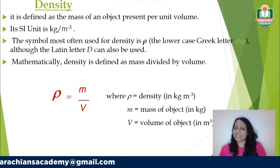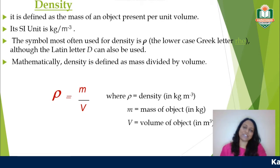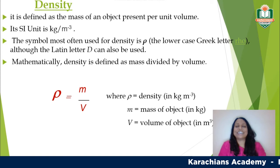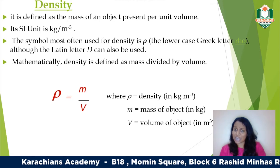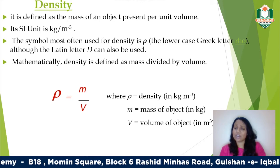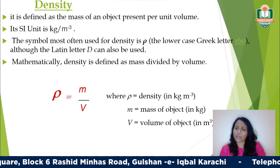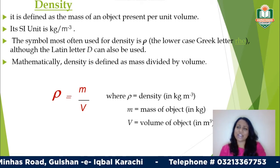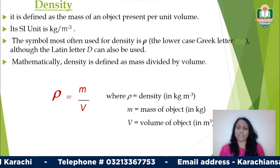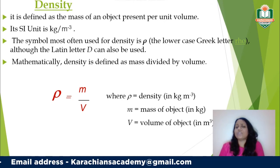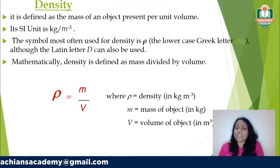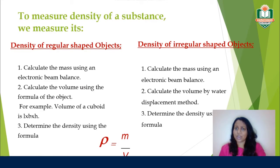Next we start with density. Density is the mass of an object present per unit volume — you divide the mass by the volume to get the density. The SI unit for density is kilograms per meter cubed. The symbol most often used for density is rho, though you can also write a capital D. The formula is: density = mass divided by volume. For example, if an object has a mass of 5 kg and a volume of 10 meter cubed, the density is 5 divided by 10.